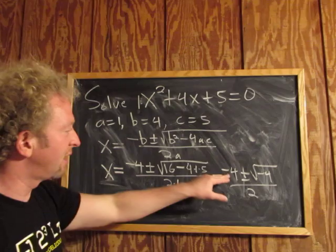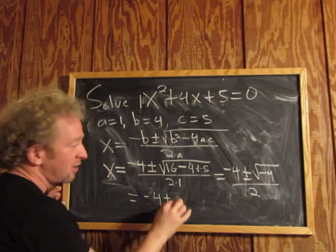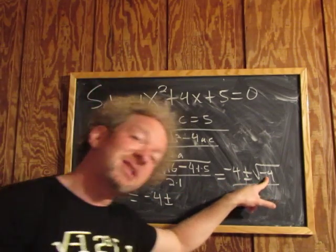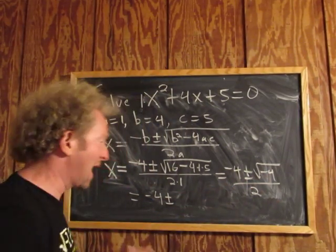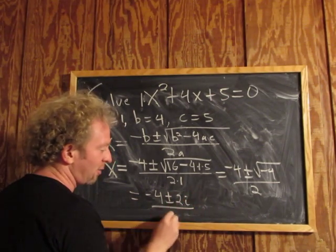Okay? Negative 4 is just negative 4, so this is going to be negative 4 plus or minus. The square root of negative 4 is 2, but there's a negative sign inside the square root, so we're going to get 2i. So we get 2i, and then over 2.